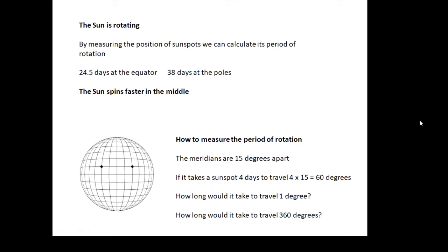What we find is very interesting: that it spins faster in the middle around the equator. It's about 24 and a half days to rotate, whereas near the poles it's about 38 days to rotate. Remember that the outside of the sun isn't a solid body, it's actually made up of a thing called a plasma which is like a fluid, like a gas. And the sun spins faster around the equator.